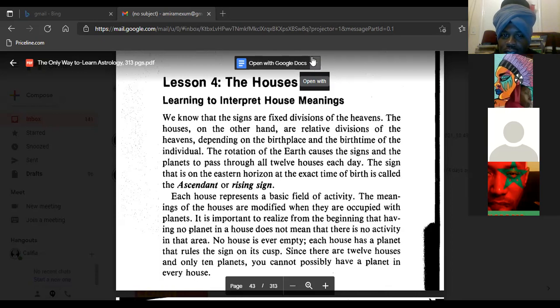The rotation of the earth causes the signs and planets to pass through all 12 houses each day. The sign that is on the eastern horizon at the time of birth is the ascendant or rising sign. Each house represents a basic field of activity.